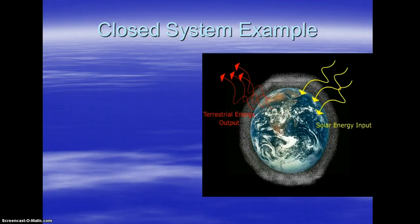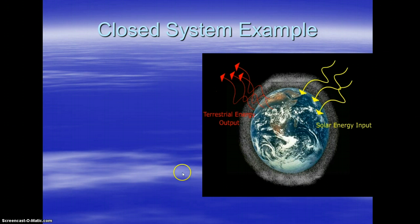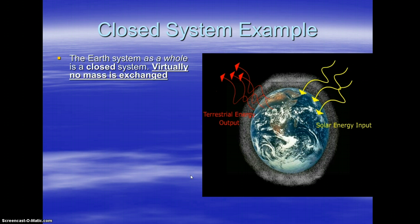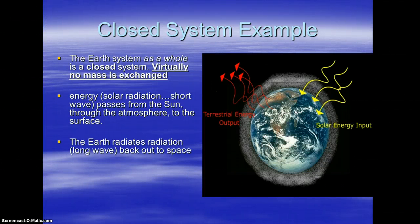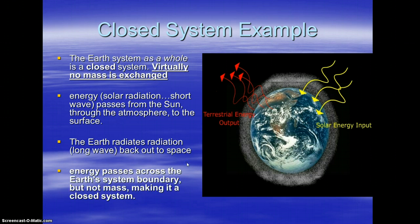Closed system example: you can see this image of our Earth with red and yellow arrows representing energy inputs and outputs. The Earth system as a whole is a closed system — virtually no mass is exchanged. Energy, like solar radiation in the form of shortwave energy, passes from the sun through the atmosphere to the surface of our planet. Then the Earth radiates radiation in the form of longwave back out to space. The shortwave and longwave you do not need to know for the Unit 1 test — you will need to know it for our climate change unit, which is Unit 4. Energy passes across the Earth's system boundary, but not mass, making it a closed system.